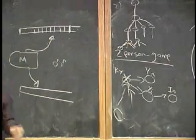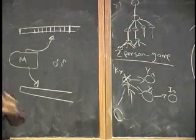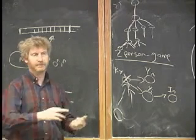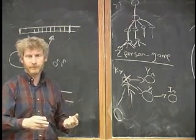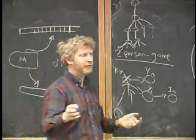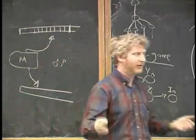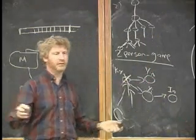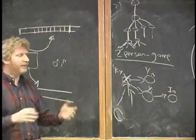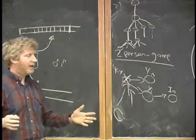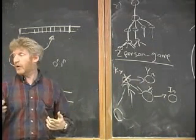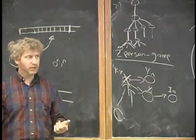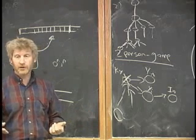All the PSPACE-complete problems are just like this - they're all alternating games. I'll give you an alternating game on 3-satisfiability. This game is PSPACE-complete. I give you a formula, and instead of asking, is there some way to make the formula true - is there some assignment true or false?